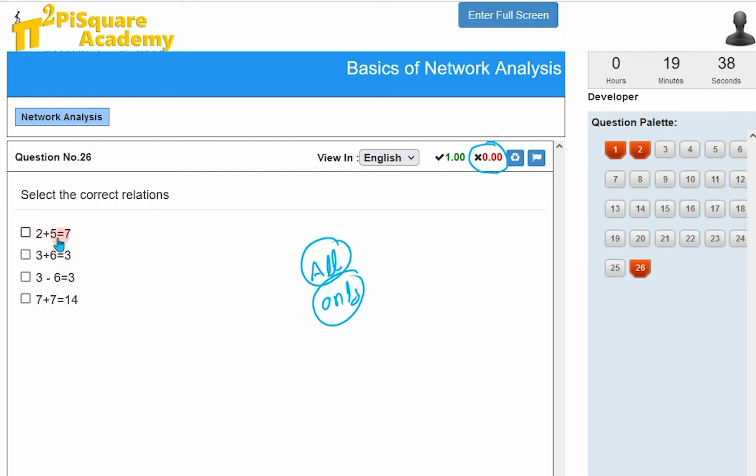So, 2 plus 5 is 7. Correct. Select it. This is wrong. Don't select. This is wrong. Don't select. This is yes. Absolutely right. Select it. Then only you will get full marks.